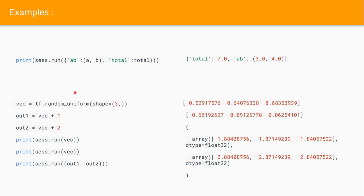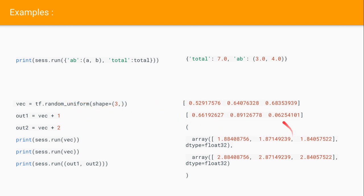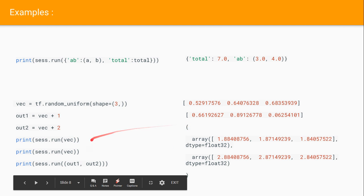Here you can define a session with tf.random_uniform with shape 3. Then I have declared one variable called out1 which is vector plus 1, output 2 which equals vector plus 2. Then I have executed this sequence, which gave random values of shape 3 and printed out the arrays. Session.run vector, session.run out1, out2. This is the basic program: declare session equals tf.Session, then session.run.